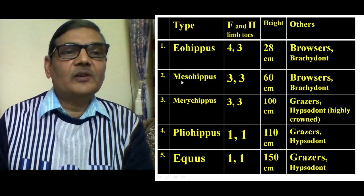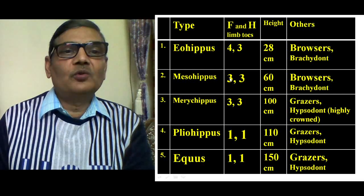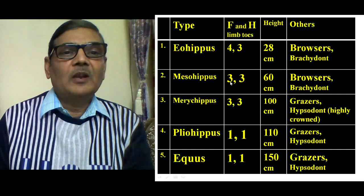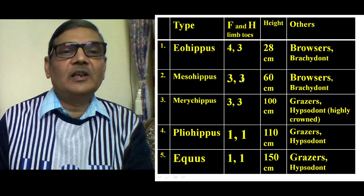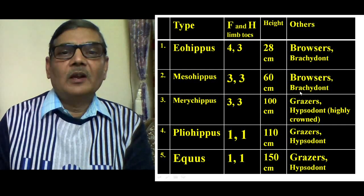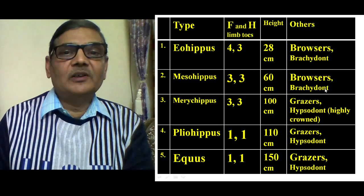The second form, Mesohippus, possessed three toes in both fore and hind limbs — the second, third, and fourth. The third toe was prominent in both fore and hind limbs. Their height was 60 cm. They were also browsers with brachyodont type teeth.